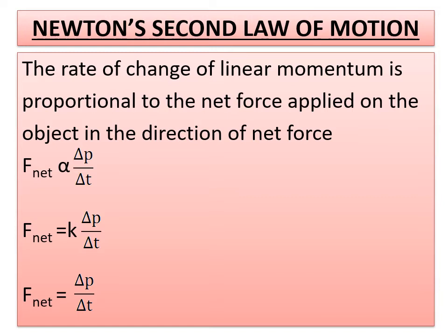The rate of change of linear momentum is proportional to the net force applied on an object in the direction of net force. We can write the expression in such a way: F_net is proportional to delta P by delta T.